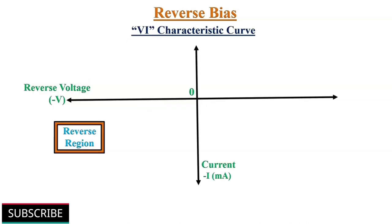The VI characteristic curve of reverse bias junction shows that a very small microamperes leakage current flows. In case of silicon diode, leakage current is less than 20 microamperes. For germanium diode, it is less than 50 microamperes.